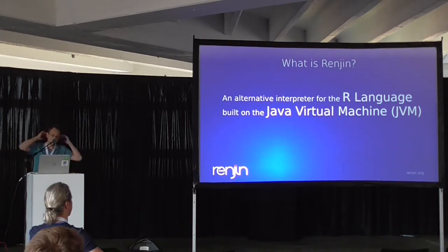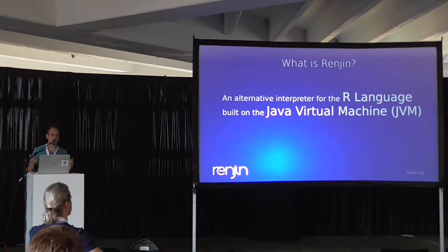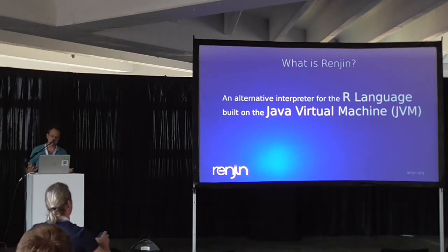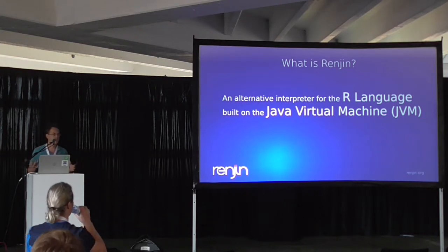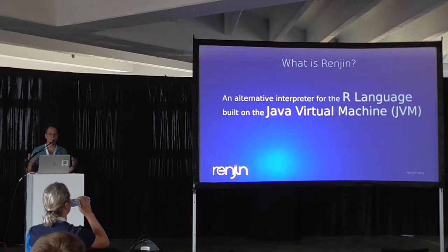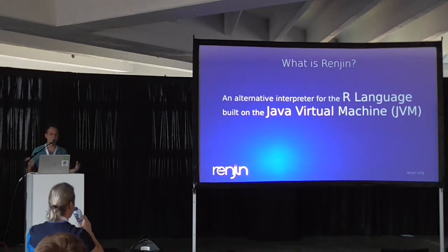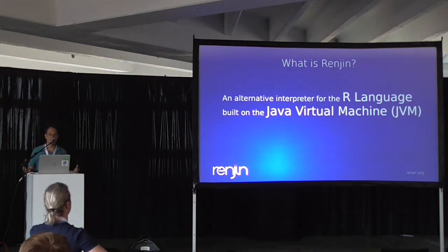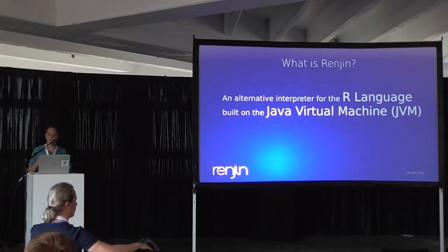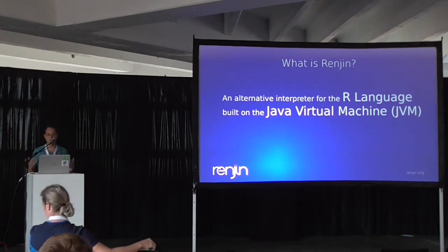Renjin is an alternative interpreter for the R language built on the Java Virtual Machine. It's open source, reuses all of the R code from the base and stats packages, but we've rewritten the internals of the interpreter in Java to take advantage of the JVM's state-of-the-art garbage collector and code generation facilities, so we can generate machine code very quickly on Windows, Linux, or whatever platform.